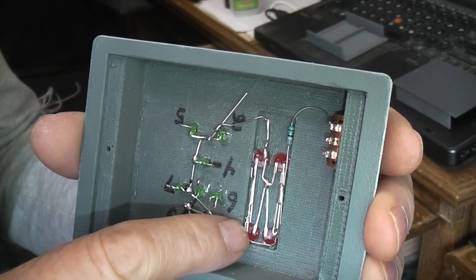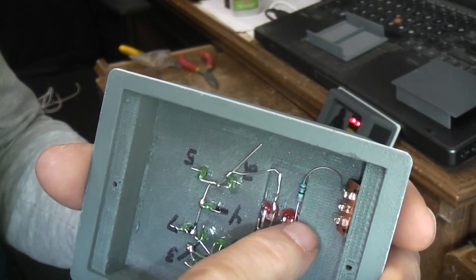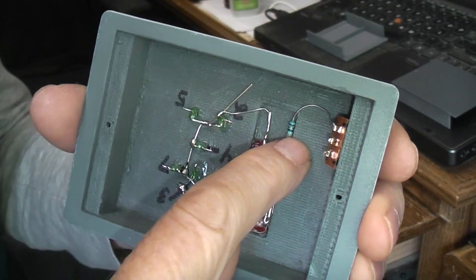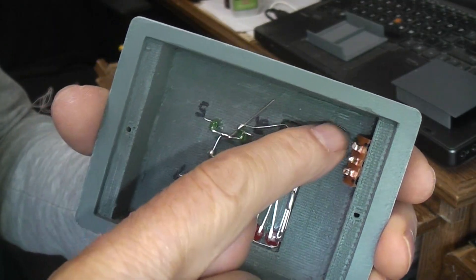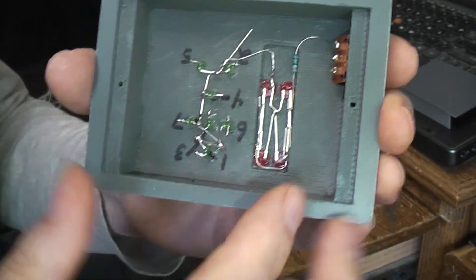I've got all the positive sides of the LEDs connected together. In this case I'm running them through a 39 ohm resistor and brought it right up to one of the contacts on the switch.